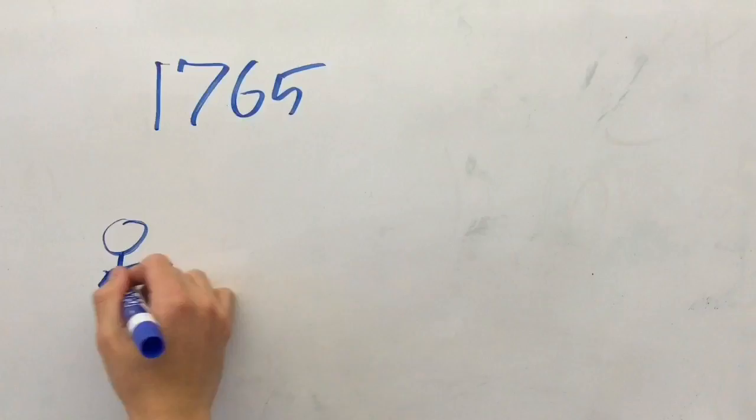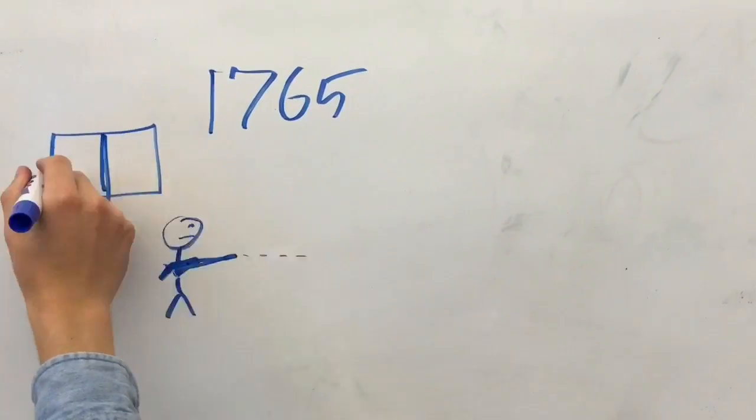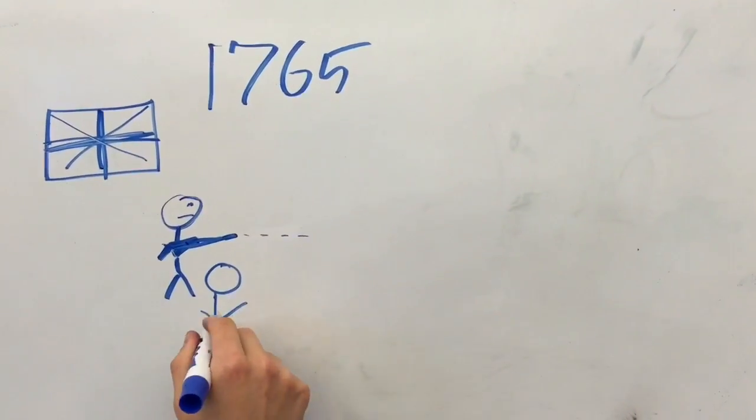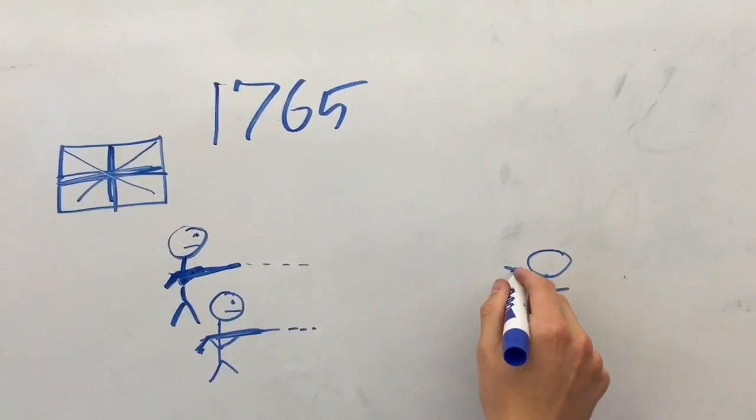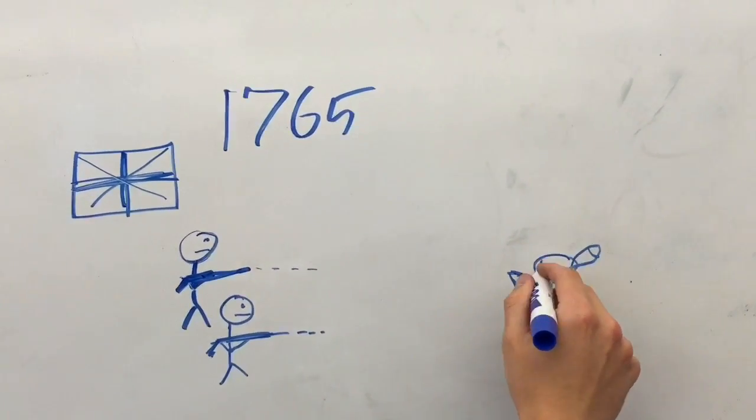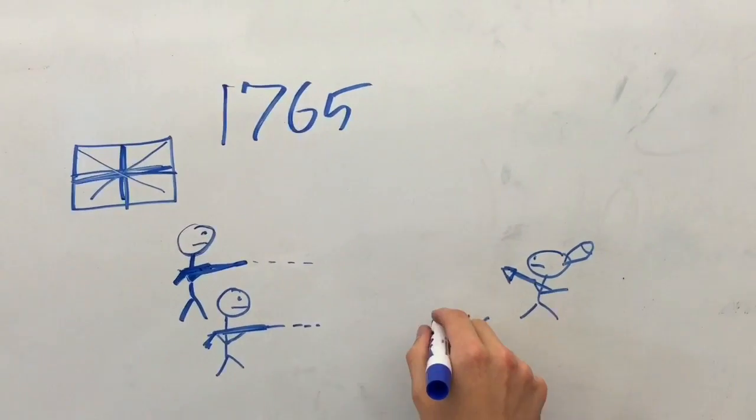In 1765, the British fought and won in the French and Indian War, also known as the Seven Years War. It's called the French and Indian War because the French and Indians fought against the British.